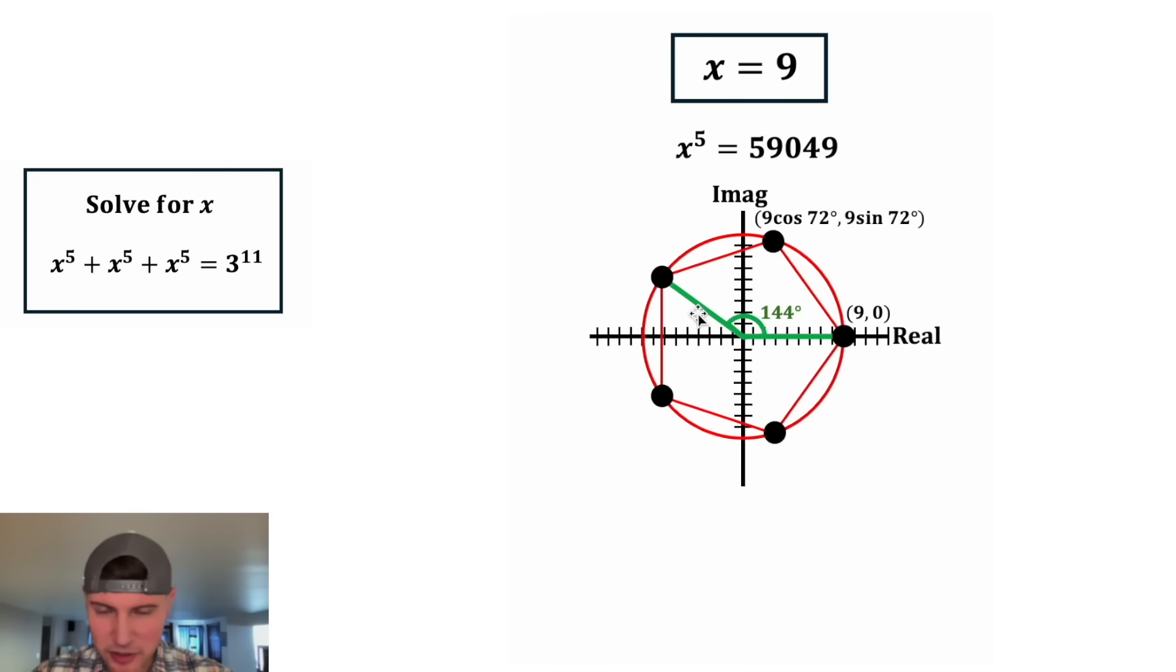And then the next one's located at 144 degrees, so this would be 9 cosine 144 comma 9 sine 144. And the next one will be located at 216 degrees, so it'd be 9 cosine 216, 9 sine 216. And then the last one's going to be at 288 degrees, so it'll be 9 cosine 288 comma 9 sine 288.